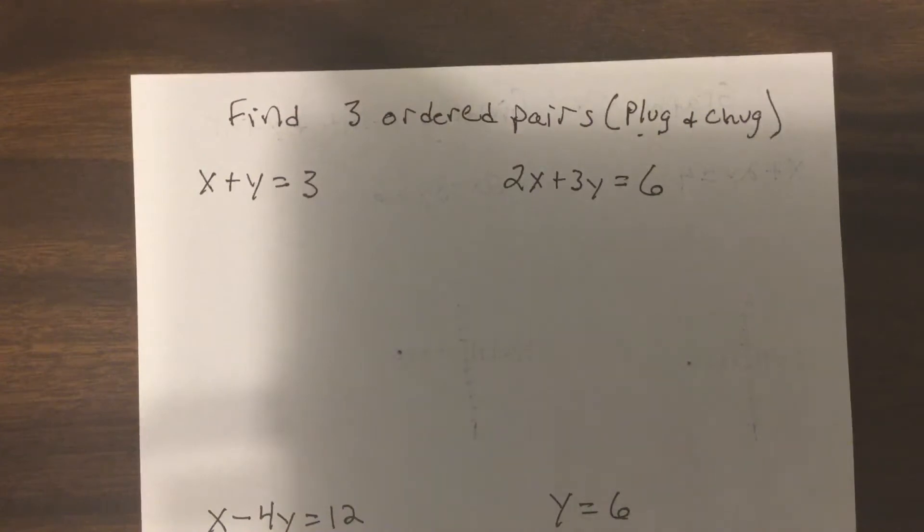I showed you three different ways to graph and you really need to know all three for your future mathematical education. I call it plug and chug, call it whatever you want, but can you find an ordered pair by plugging a value in for X or Y?